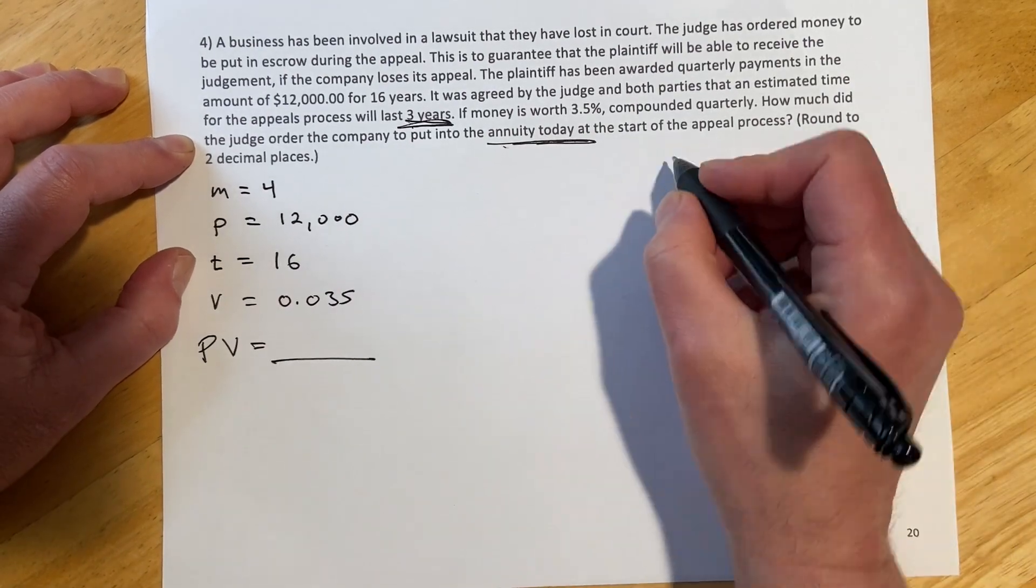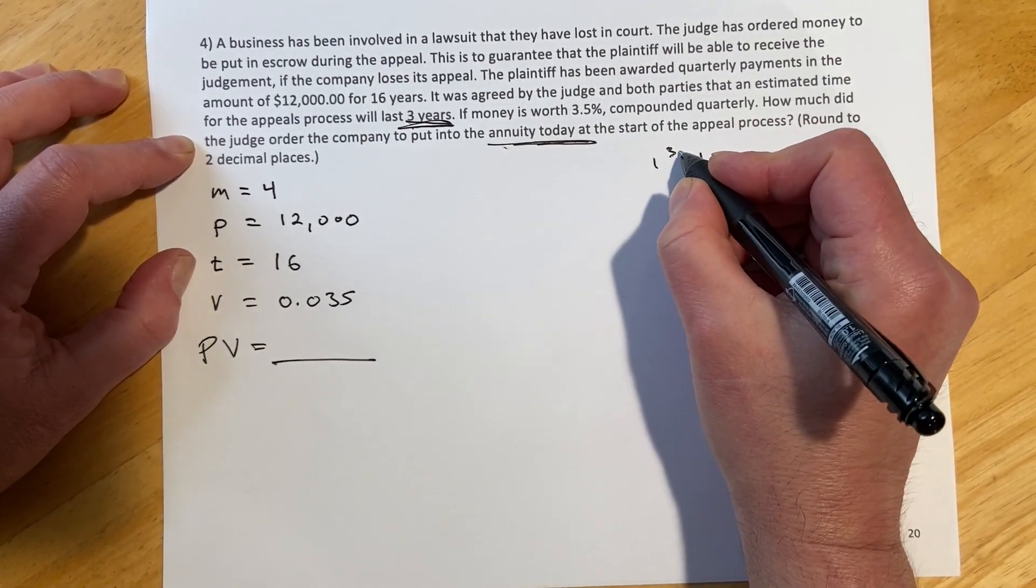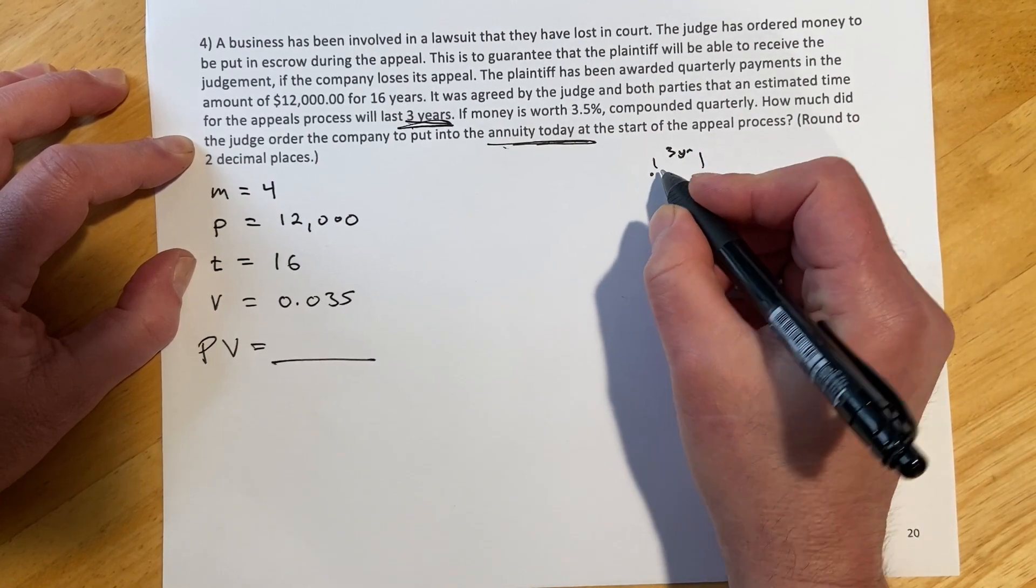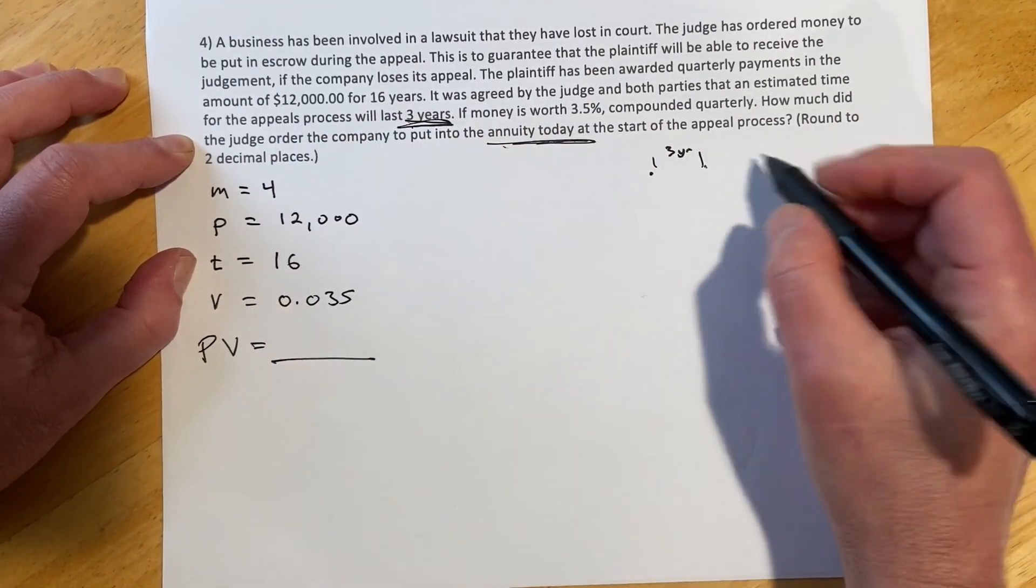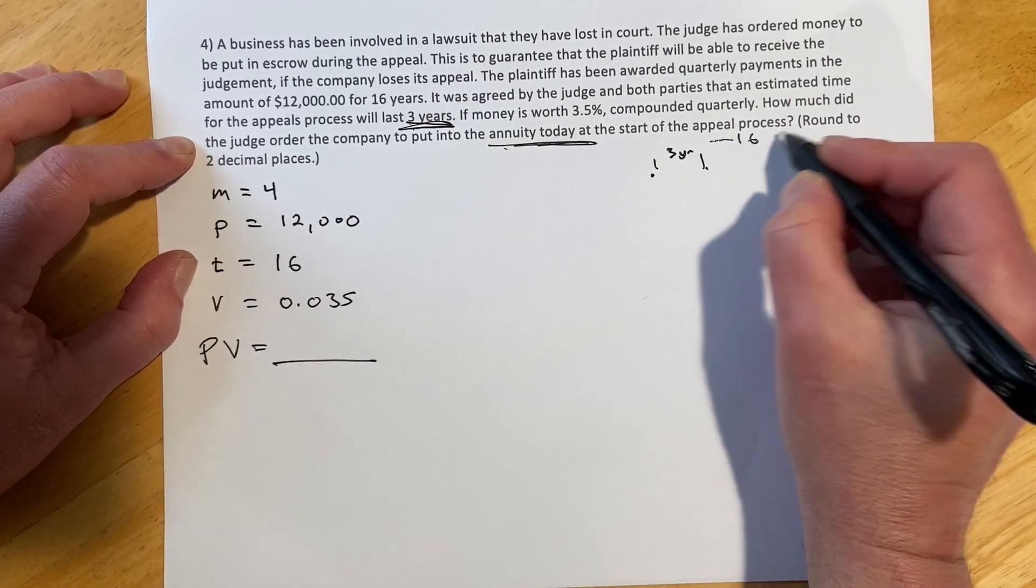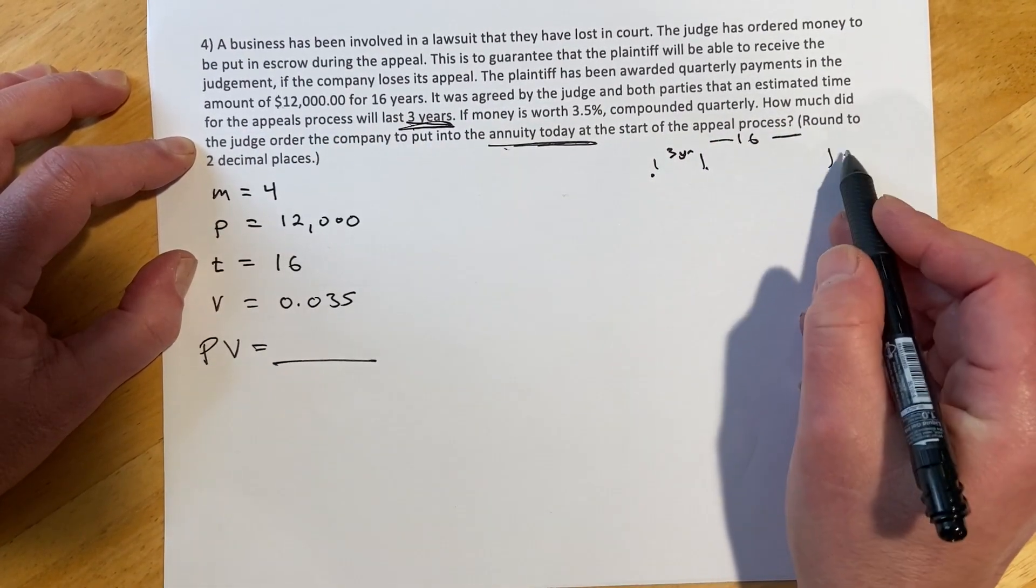So the idea is we're going to have these three years that we're going to put some money away. And then if they lose the case, they're going to, for the next 16 years, make these quarterly payments of $12,000.